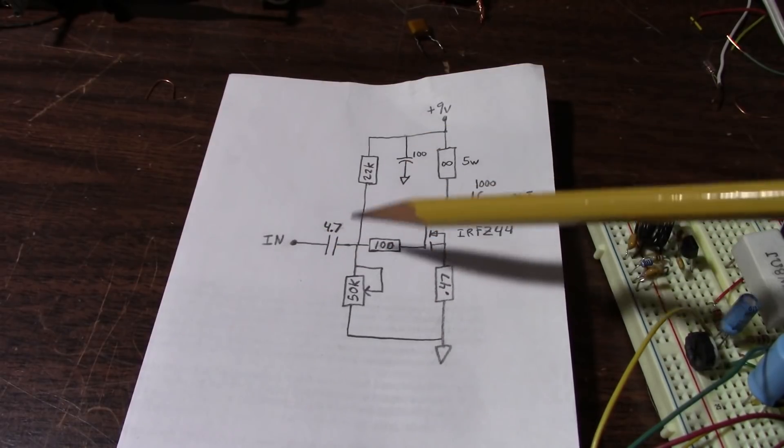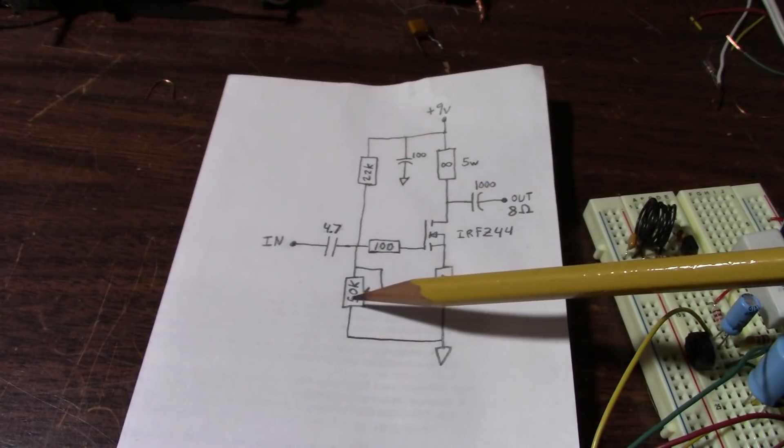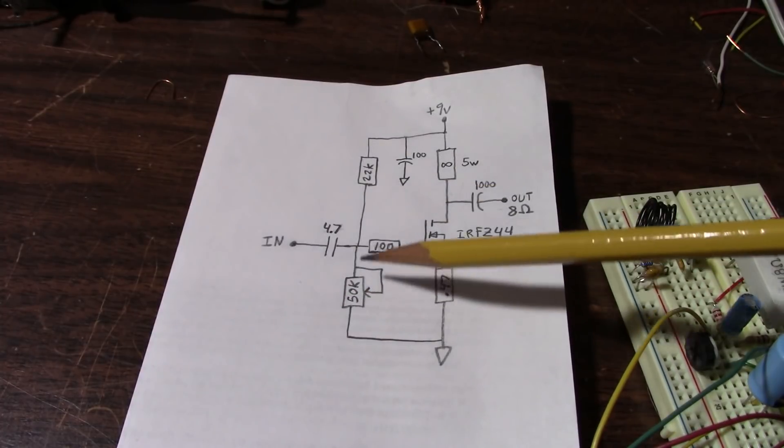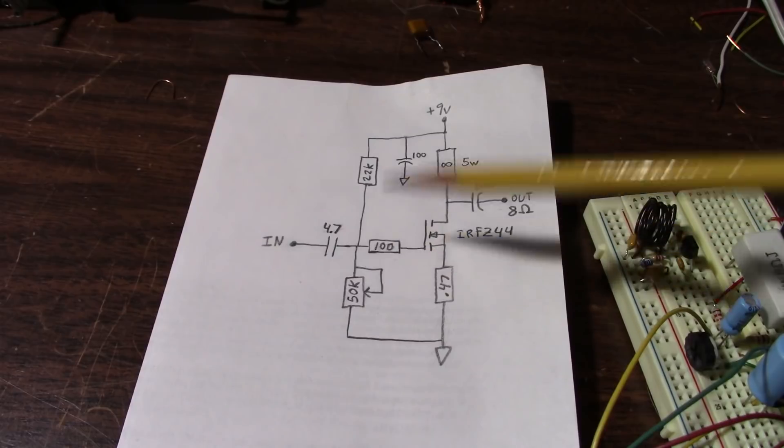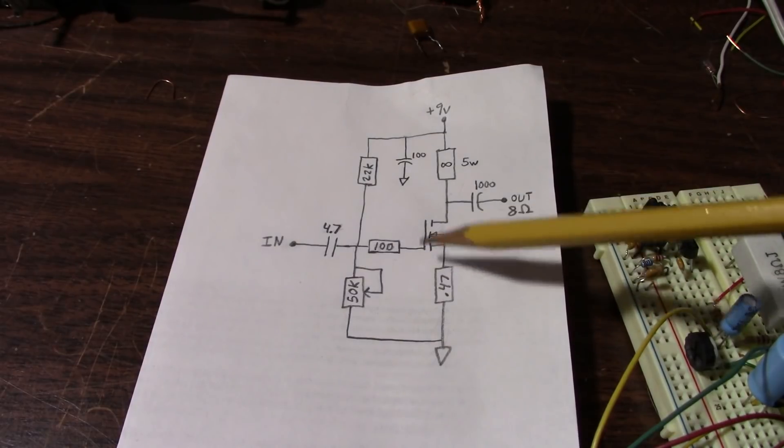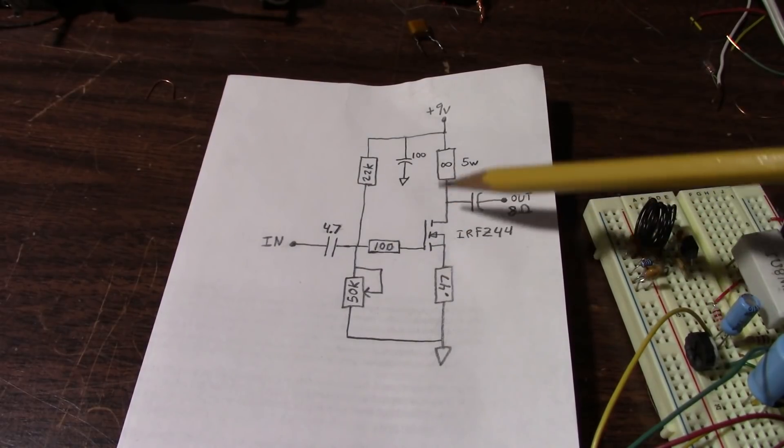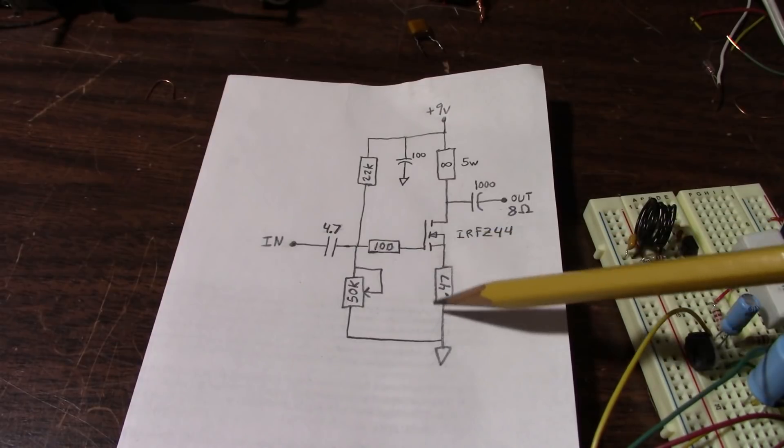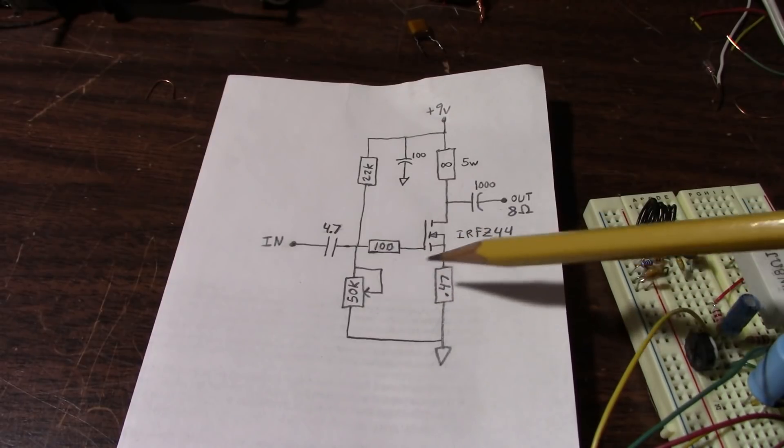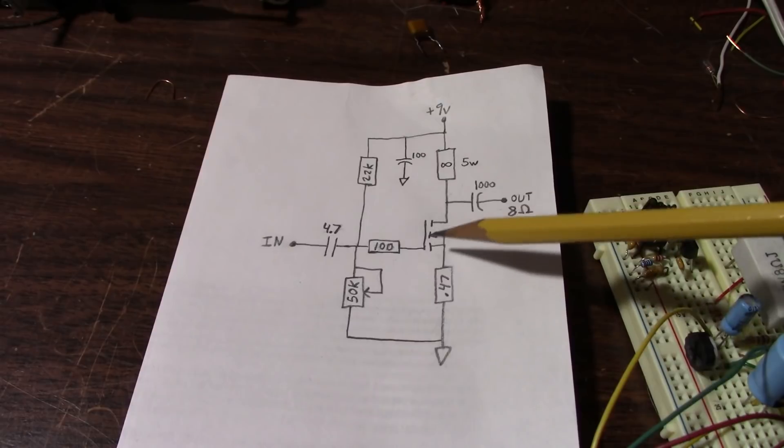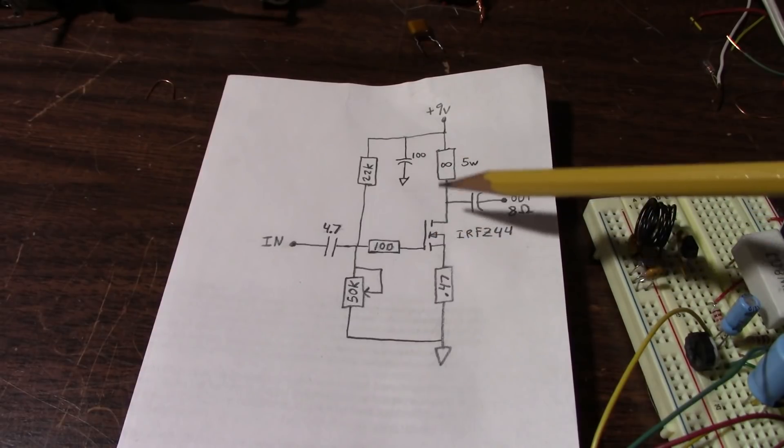And it also makes this control here when you're setting the bias a little less touchy because of the same reasoning. And when this MOSFET warms up, it will conduct more. So this also helps with thermal stability. And yes, these types of MOSFETs will conduct more as they warm up.